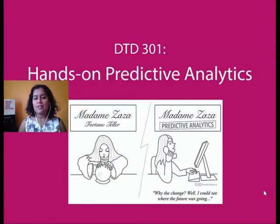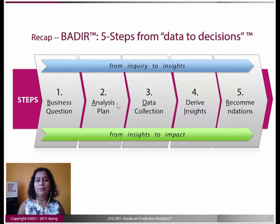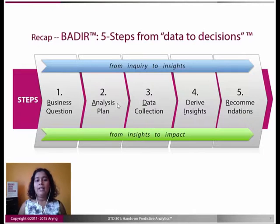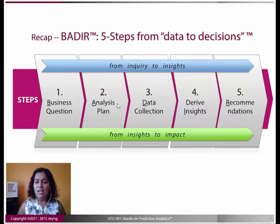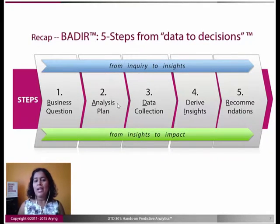As you know, BAID is an acronym for five steps, starting from business question, then going into the analysis plan, then collecting relevant data, and driving insights — which is where the biggest modeling part happens and where we spend most of our time in this course — and then making recommendations. You'll also have the blue track and the green track.